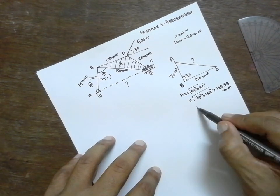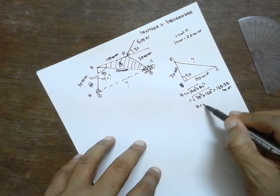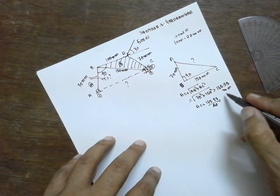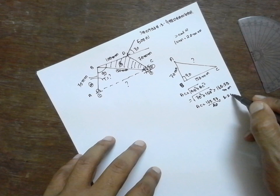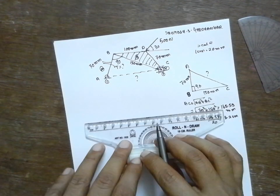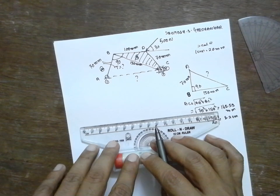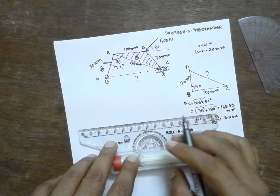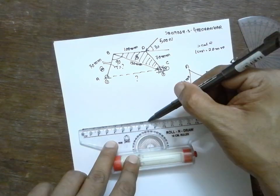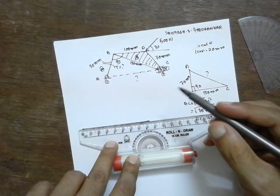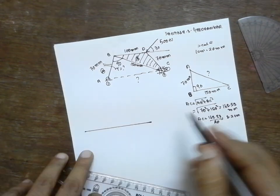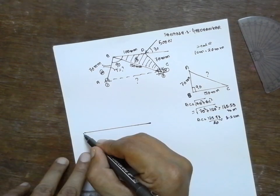Divided by 20. It will be 8.2 cm. I will draw a line to 8.2 cm. I will construct 8.2 cm here. This is 8.2 cm. This is A. This is Piston C.